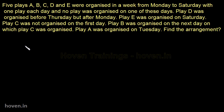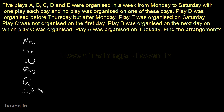Let us first write the days of the week: Monday, Tuesday, Wednesday, Thursday, Friday and Saturday. These are the days available and A, B, C, D, E will have to be allocated to these. No play was organized on one of these days, so one of these days was a no-play day. We will see it as we go.